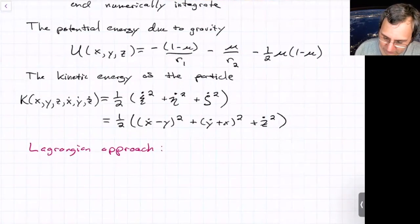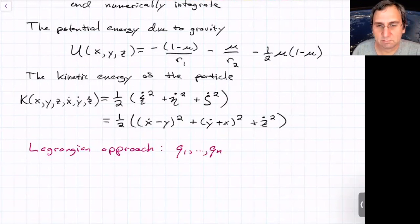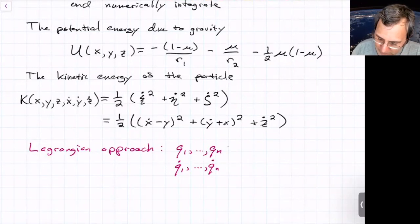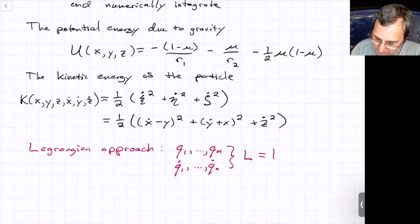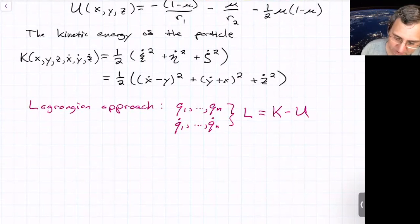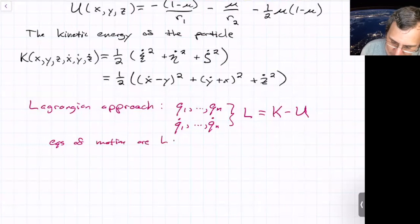In the Lagrangian approach, you write a system in terms of some number of generalized coordinates. We usually write those as q's. So q1 through qn. And then those have time rates of change, q1 dot to qn dot. And what you do is you write something called the Lagrangian function, which is kinetic minus potential. As long as it's written in terms of these generalized coordinates, you can write down the equations of motion. So this is the Lagrangian approach. The equations of motion are Lagrange's equations.